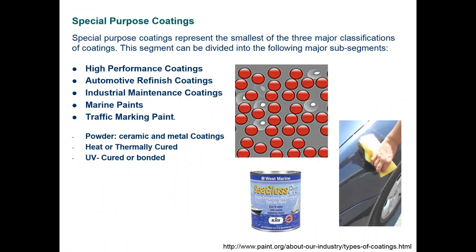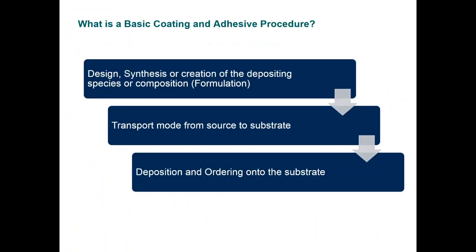Along with specialty purpose coatings, we can be looking at high performance, marine environments. These can be applied either by casting, brushing, powder, heat, or UV curing. In essence, when we have a basic coating material, we can formulate our way toward a new property, and then use a transport mode — which can be spraying, solvent-based, or powder-based — and deposit it on a surface or substrate. In which case, we will be focusing on a 3D printed object.